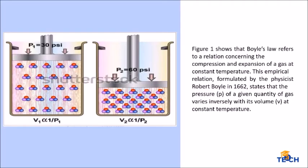He measured the volume of the trapped air and the difference in the heights of mercury columns in the two arms of the tube, as he poured successive amounts of mercury into the open end of the tube. He found out that the volume of the trapped air decreases.